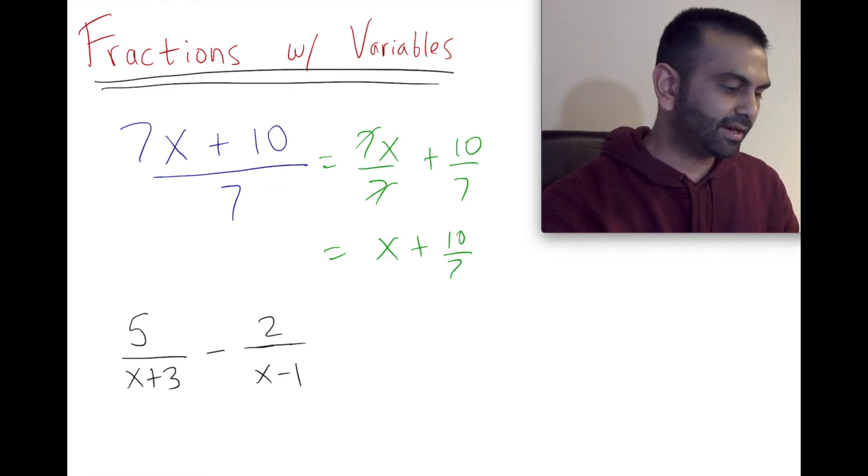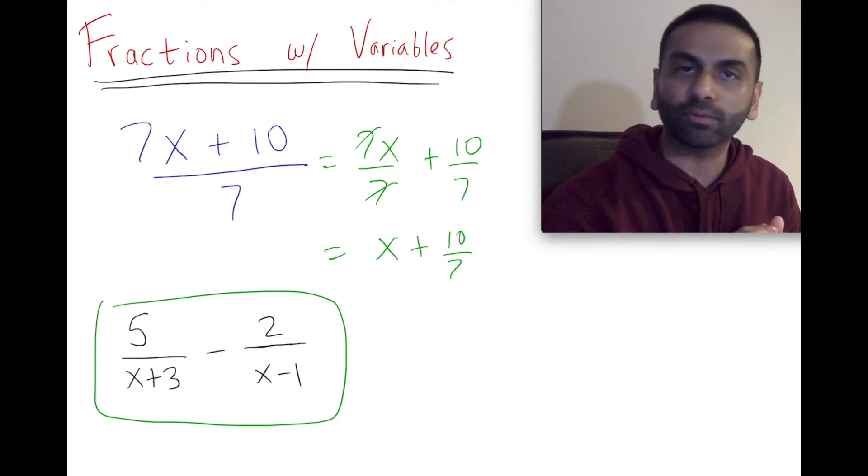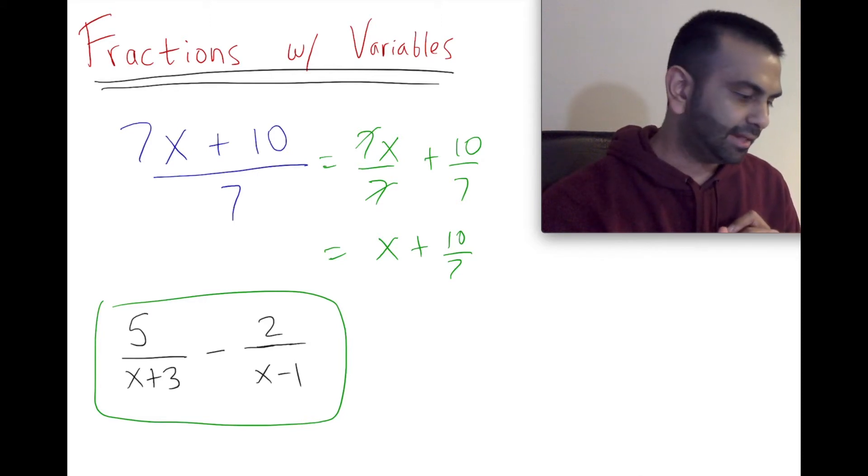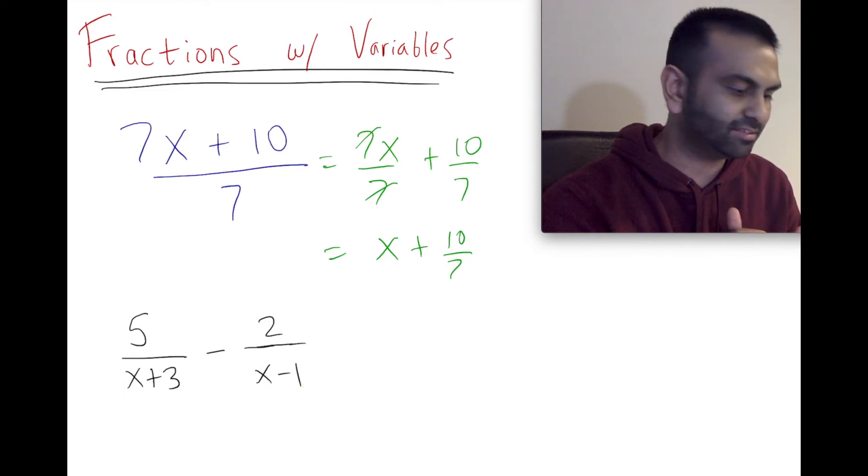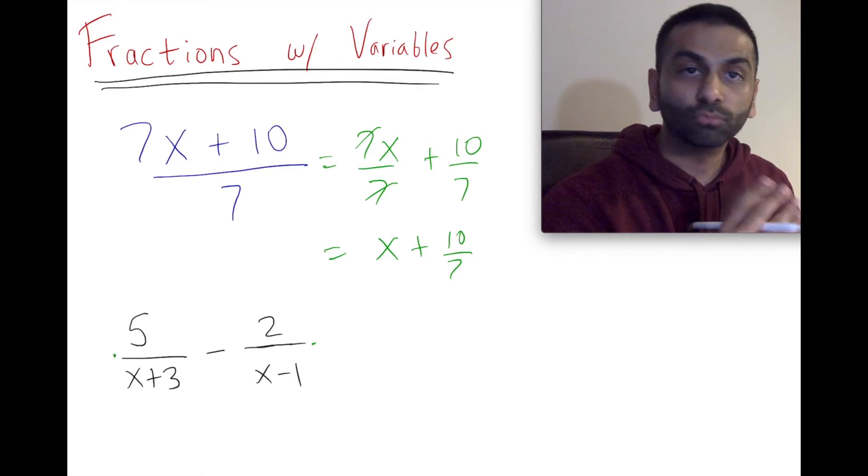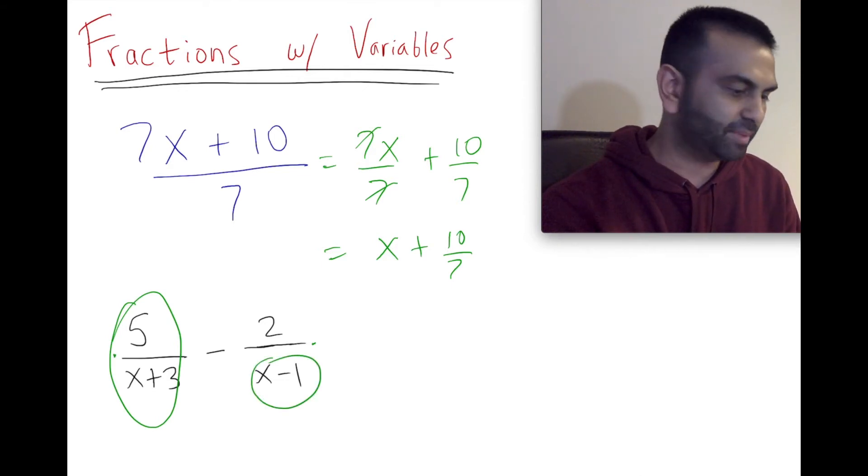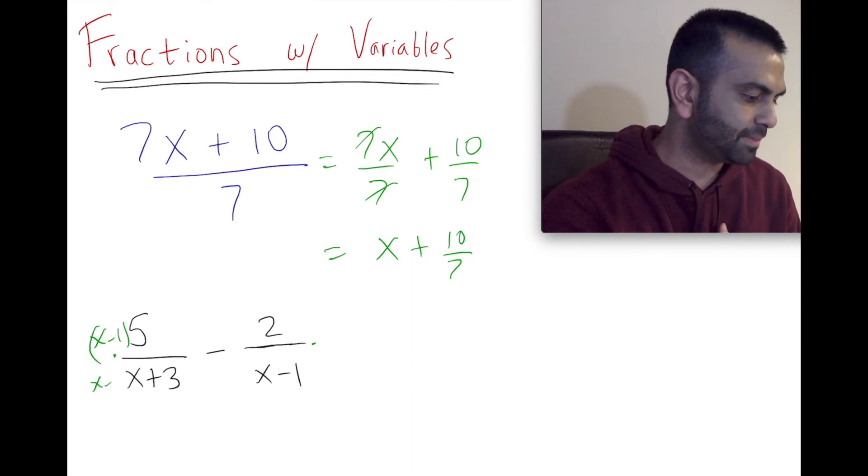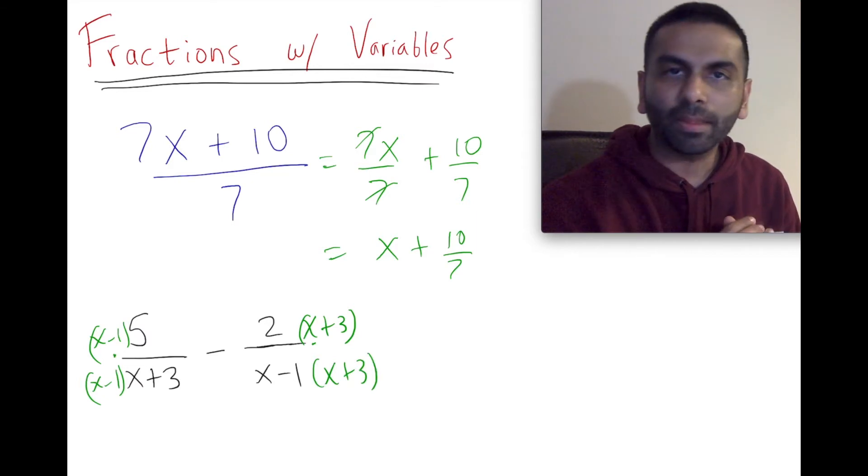Now let's take a look at another problem. We're subtracting fractions, which means we're going to have to look for a common denominator. These two have different denominators, so we can't just directly subtract the fractions. What we've got to do is multiply each term by the other guy's denominator. So for this term, we're going to multiply by the other guy's denominator, which is x plus 3, on the top and the bottom.